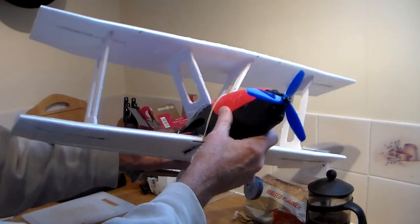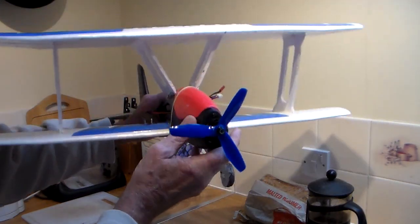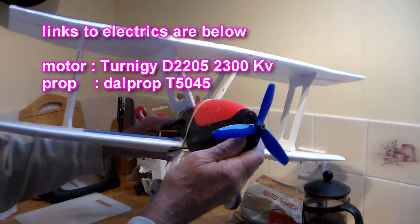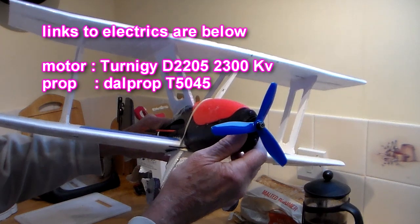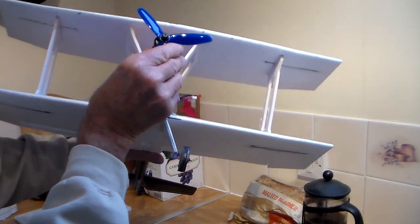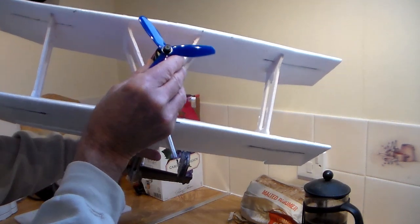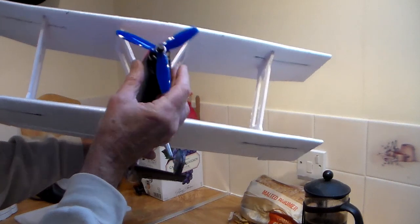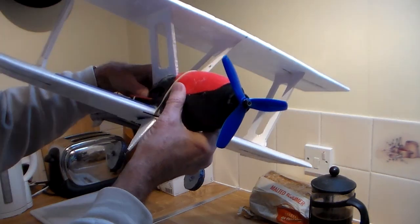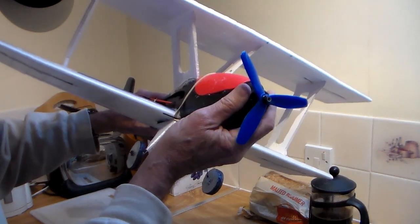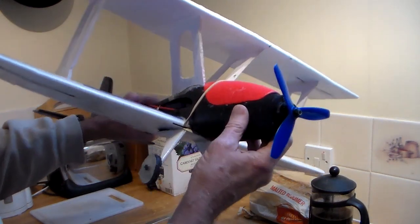Motor on the front here is a Turnigy D2205 2300kV. I tried it with a two-bladed 5045 and I think it probably would have flown, but I think I'll get a bit more grunt with a three-bladed. With an 800 milliamp 3S, the motor's not getting warm, so I reckon that's going to be okay.